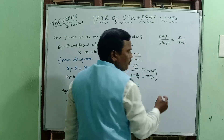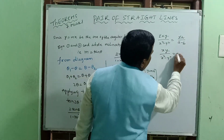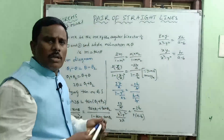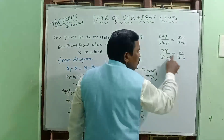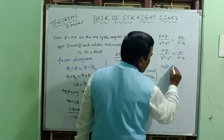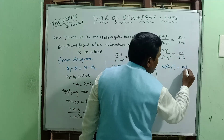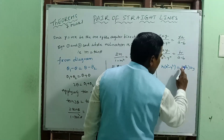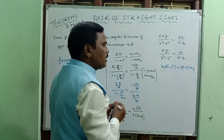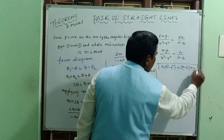Simplifying: xy by x square minus y square equals h by a minus b. Cross multiplying: h into x square minus y square equals a minus b into xy. This is the angular bisector theorem. The combined equation of the pair of bisectors is h into x square minus y square equal to a minus b into xy.